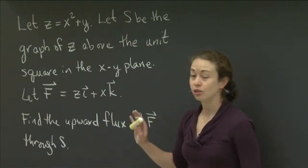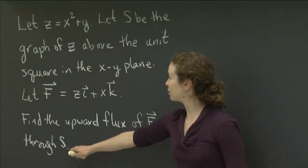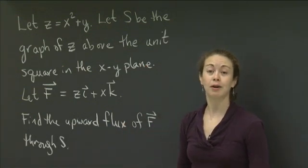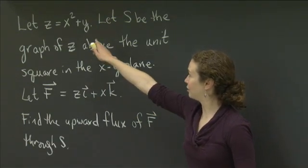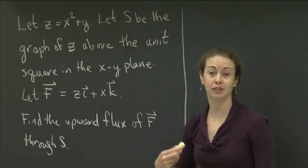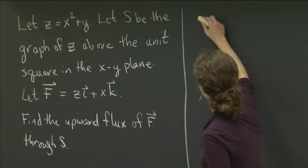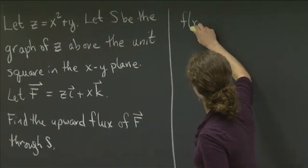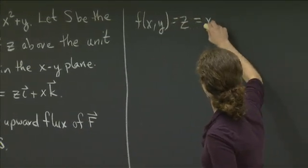OK, welcome back. So again, what we want to do is find the upward flux of F through this surface S. Let's think about first, how do we describe the surface S? S is the graph of z equal x squared plus y. So we can think of it as a function of x and y over the unit square. So we can say f of xy is equal to z, which is equal to x squared plus y.